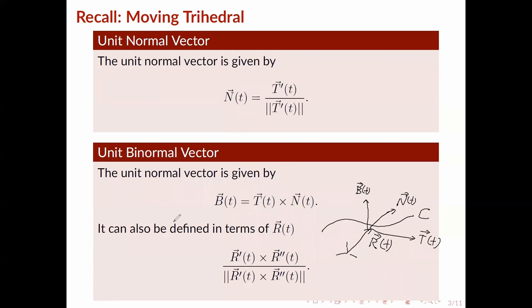We can also define the binormal vector in terms of r using this formula: the cross product of the derivative of r with the second derivative of r, divided by the magnitude of that same vector.